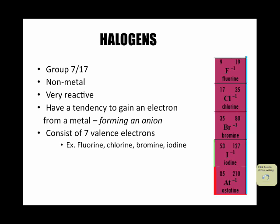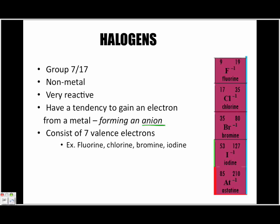Now we're moving to the complete opposite side of the periodic table — to the right of the aluminum staircase. We have what we call the halogens, which are part of group seven or group 17. Because they're to the right of the aluminum staircase, they are considered non-metals. They are very reactive and have a tendency to gain an electron from a metal. Metals lose electrons; non-metals like to gain electrons. Because they gain electrons, they form what we call anions, so non-metals become anions and metals become cations.